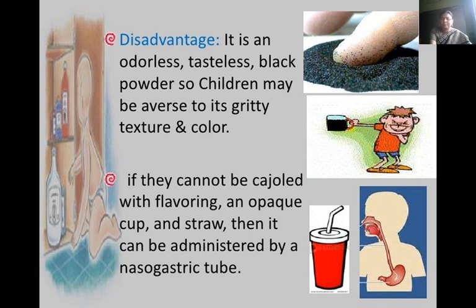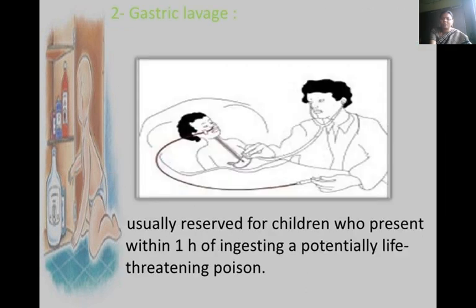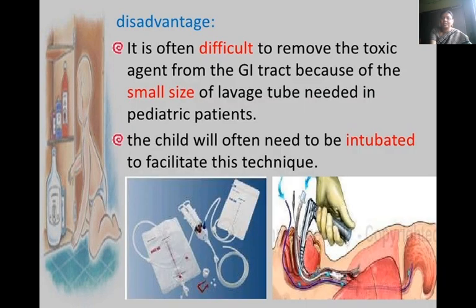If children cannot tolerate it, it can be given in an opaque cup with a straw, or administered by nasogastric tube. Gastric lavage is reserved for children who present within one hour after ingesting a potentially life-threatening poison. A disadvantage is that it is often difficult to remove toxic agents from the GI tract due to the small size of the lavage tube needed in pediatric patients.